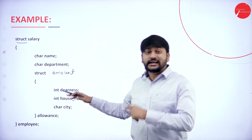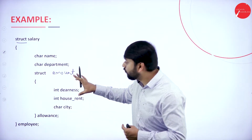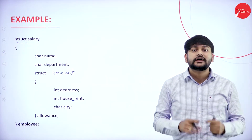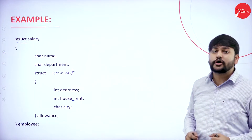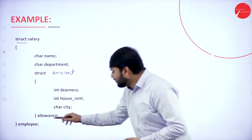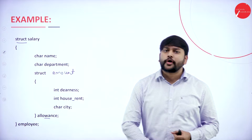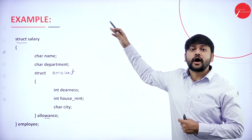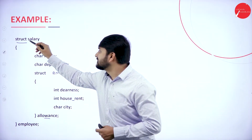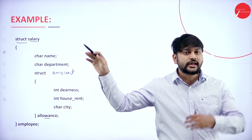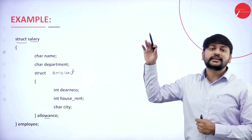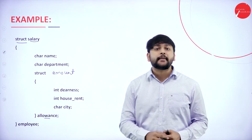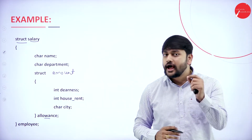I have a structure inside another structure — this is what I call a nested structure. So what are allowance and employee? Employee is the object or variable of the salary structure, and allowance is the variable of the structure amount. That's what you need to understand.